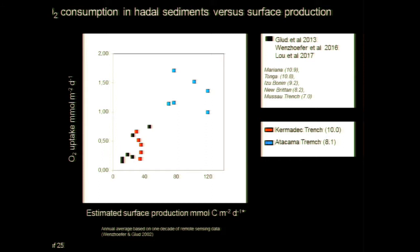Taking all hadal data that exists — including new data from these different trenches plotted against estimated surface production from remote sensing — the variation within the Kermadec Trench spans almost all the different trenches targeted in the Pacific before. The Atacama Trench gives very high levels but not necessarily linearly related to primary production. There is an overall relation where increased surface primary production is reflected in hadal system activity, but that activity is also modulated by other factors. Scaling it, the activity in hadal trenches on average is about 1.4% of surface productivity.